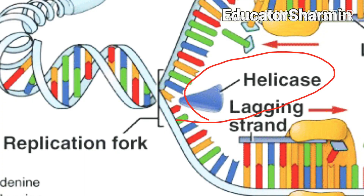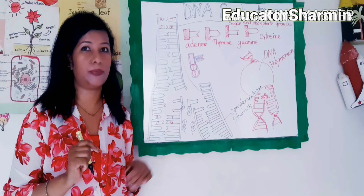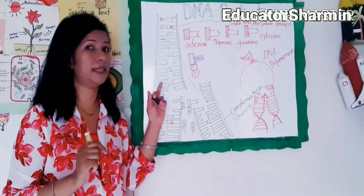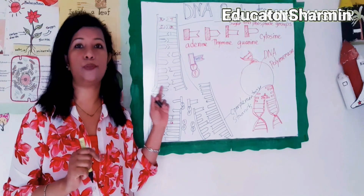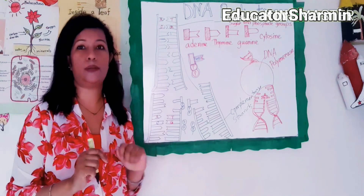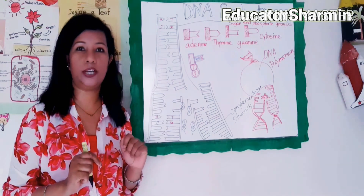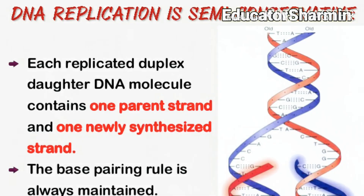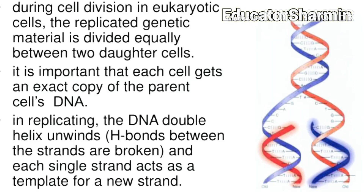The enzyme name is helicase — you must remember that. The helicase enzyme helps to break down the hydrogen bonds. Next, in the nucleus, there are nucleotides to which two extra phosphates have been added.